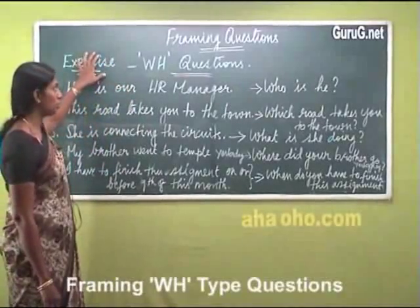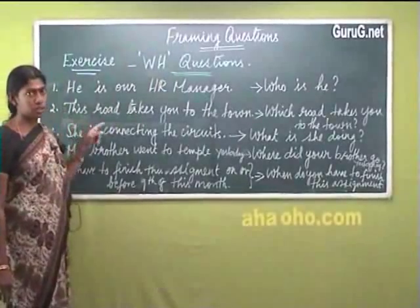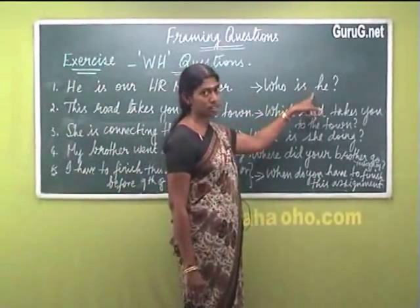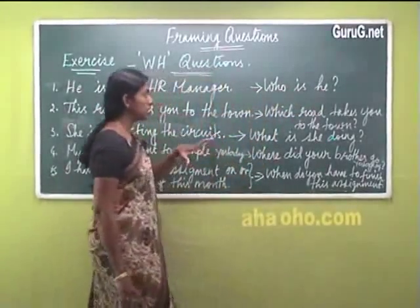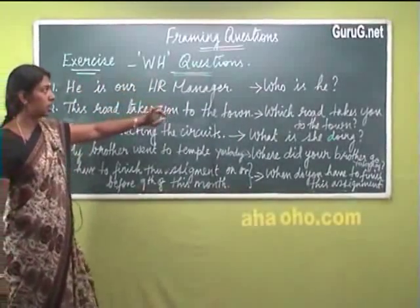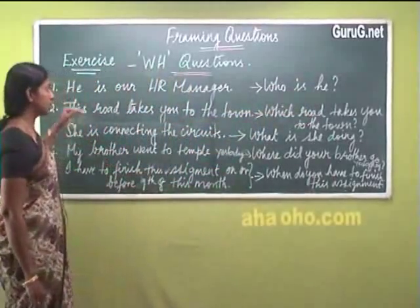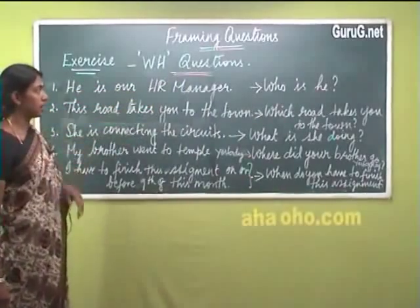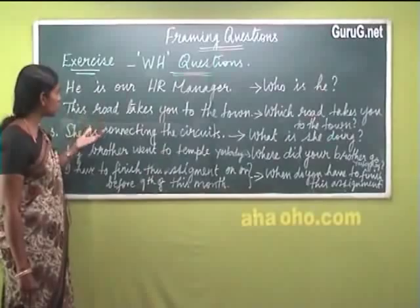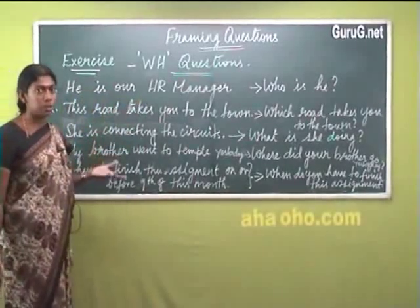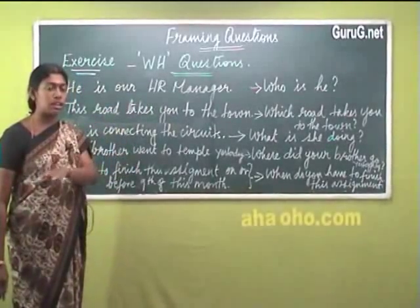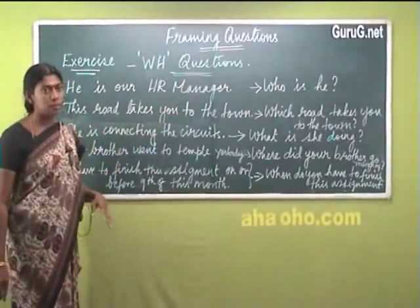Now we come to the first type: WH questions. When you frame WH questions, you have to be careful of one particular rule — the verb precedes the subject. In normal sentences, the subject comes first and then the verb; but in questions, the verb comes first and the subject goes next. For example, 'He is a HR manager.' You can frame: 'Who is he?' or 'What is he here?' Both questions would get the answer 'He is a HR manager.'